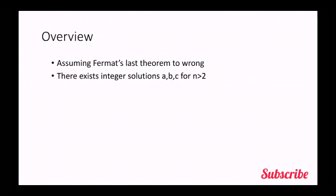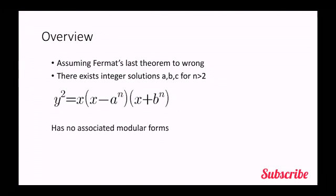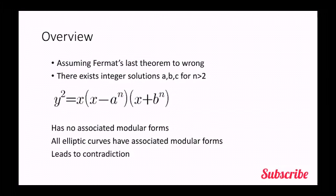This gives us an elliptic curve which is also called the Frey curve considering these two conditions. Now this elliptic curve has no associated modular forms considering the above conditions, but Andrew Wiles had proven that all the elliptic curves have some associated modular forms, which leads to the contradiction.